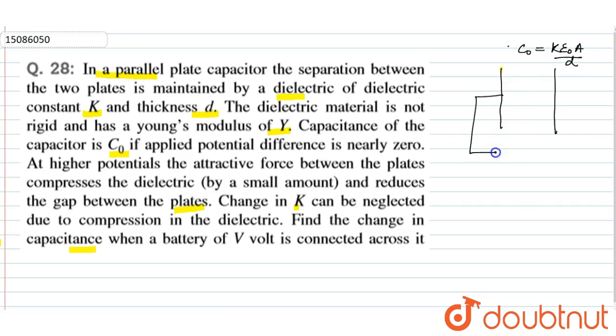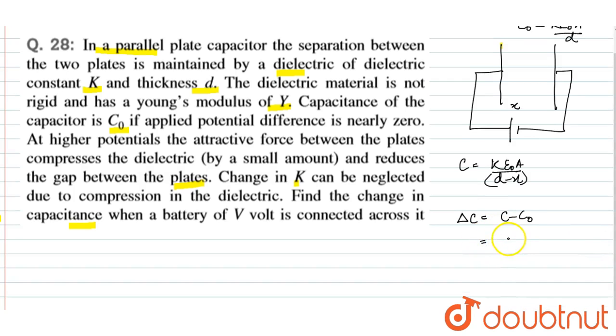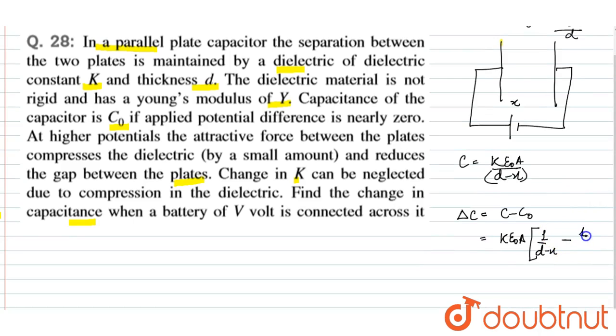Now, we apply the potential difference. It gets compressed by a small amount, say x amount. Now, what is our capacitance? It will be Kε₀A/(d-x). So this distance is negligible compared to it. We have the changing capacitance ΔC, which is C minus C0. This is equal to Kε₀A × [1/(d-x) - 1/d].